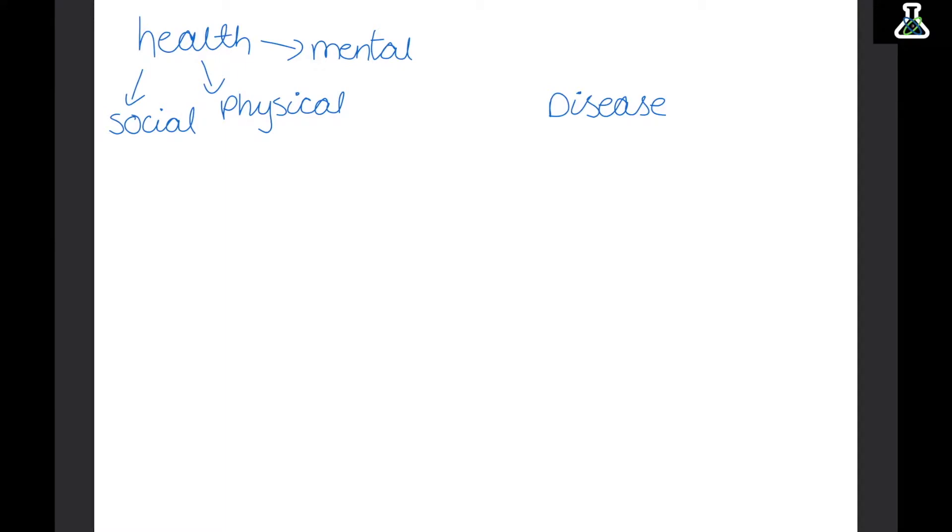And there are two types of diseases, communicable and non-communicable. Communicable diseases can be spread from person to person, whereas non-communicable diseases can't.